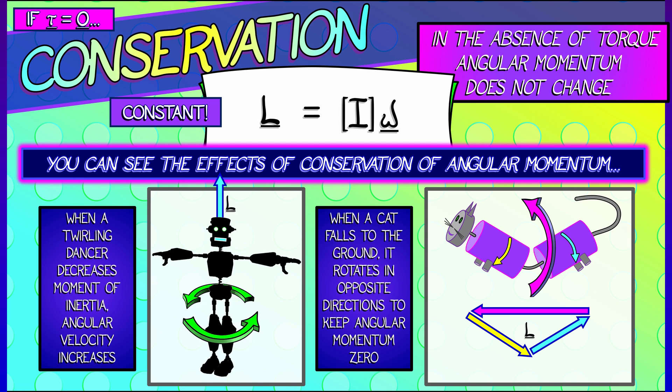in order to, using vector addition, get the angular momentum vectors to cancel out and give you zero. That's how dancers and cats work.